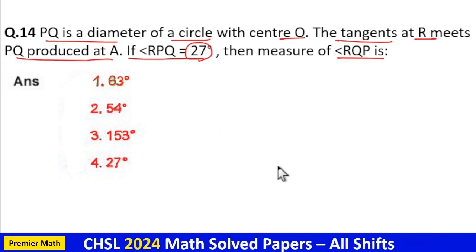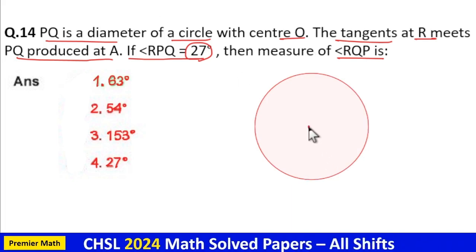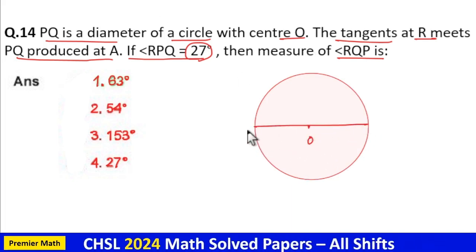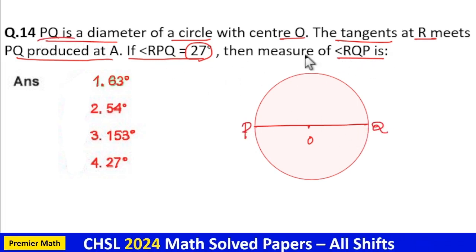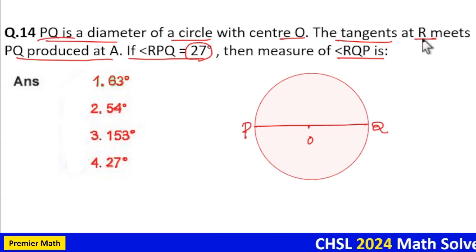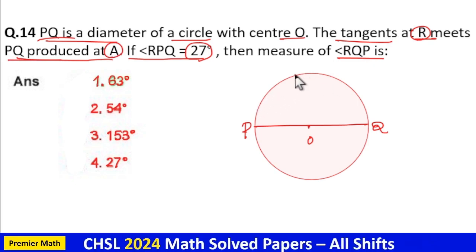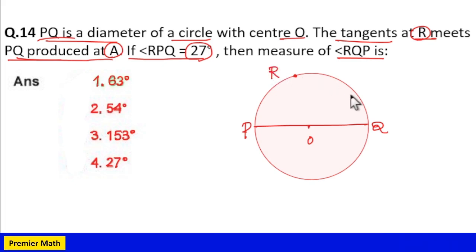Here this is the circle with center O. Now PQ is the diameter and the tangent at R meets PQ produced at A. Tangent at R means this point R must be on the circumference of the circle. We don't know where point R is, so it can be anywhere on the circumference.